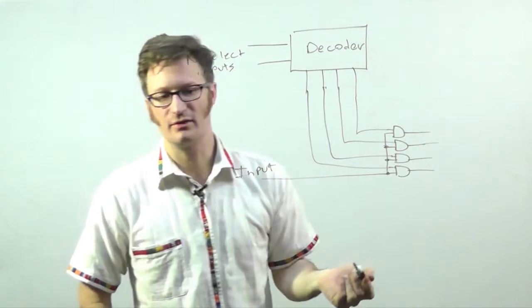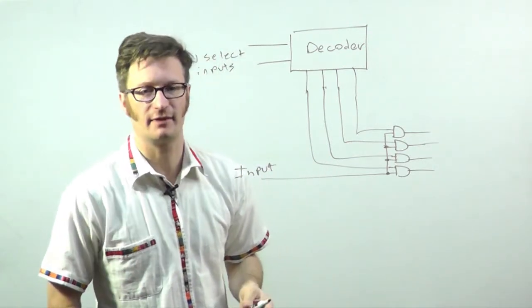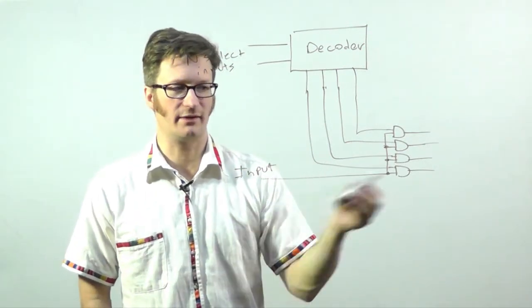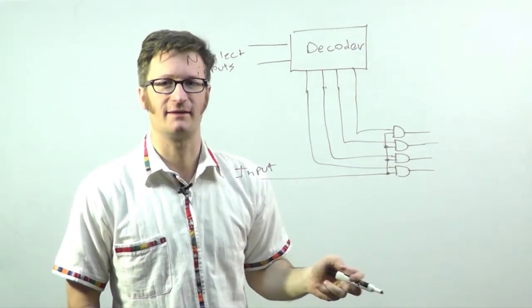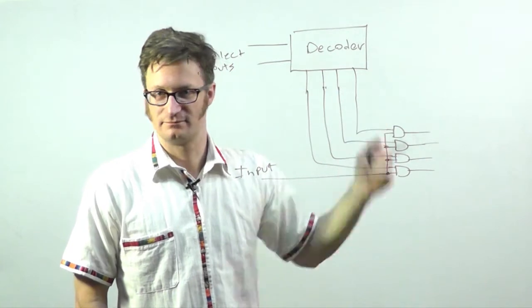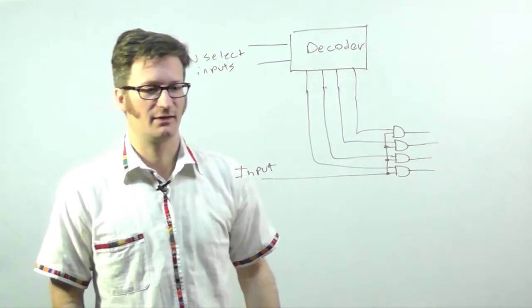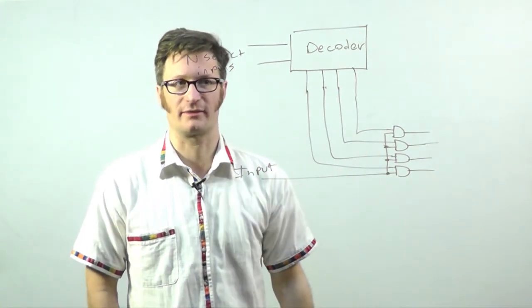So how would you use this? Let's say that you have a serial line that you want to be able to send to multiple different peripherals or devices connected to whatever it is that you're building. You can use a demultiplexer for this.